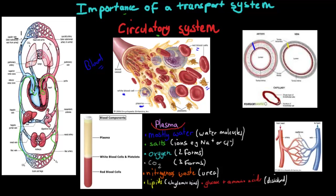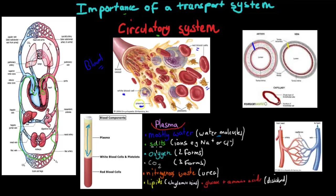So these are different types of components of blood, but the one I want to focus on a bit more is plasma. Plasma is mostly water — so it has water molecules — and about 60% of all blood is plasma, and the rest is red blood cells, white blood cells and platelets.